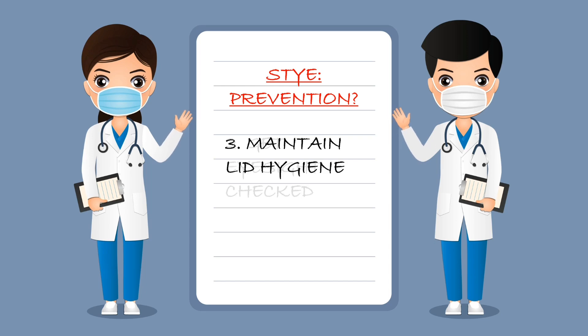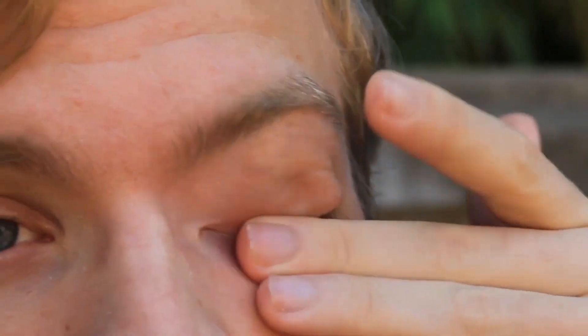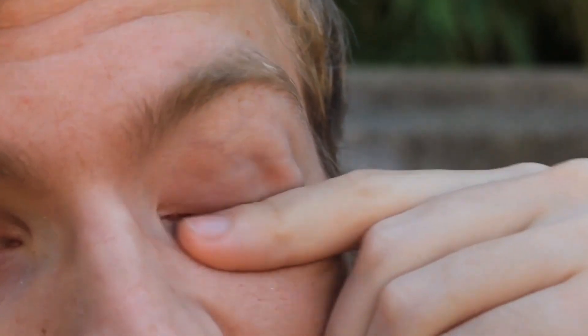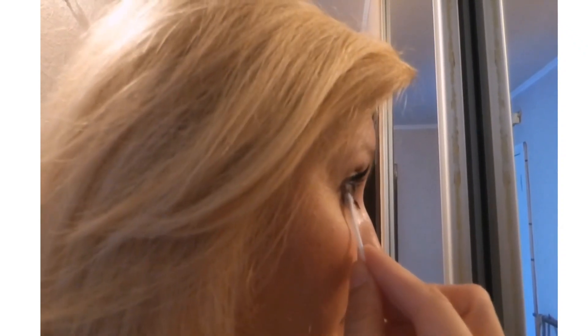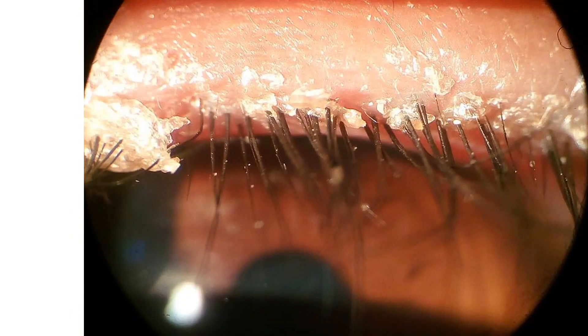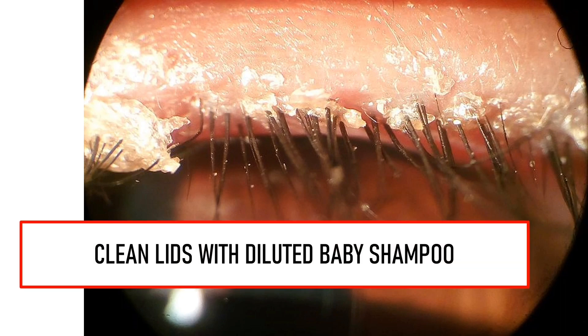Third, maintain lid hygiene. Avoid the habit of rubbing your eyes and never touch your eyes with dirty hands — this advice is especially meant for children. Do not share your eye makeup with anybody else, as that can also transfer bacteria. In case you have blepharitis, you can use diluted baby shampoo to clean your lashes.